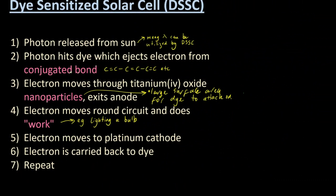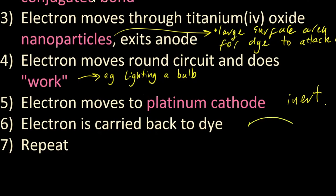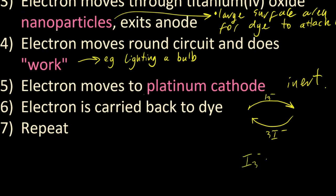The electron then moves to the platinum. Platinum's inert, receives the electron, and then the electron is carried back to the dye on this very clever kind of transportation process. The triiodide ion and the iodide ion are involved in that. No way they're going to ask you to memorize that equation, maybe ask you to balance it.